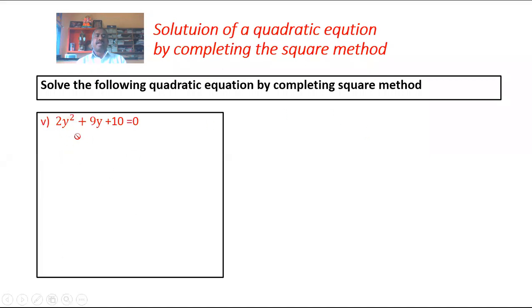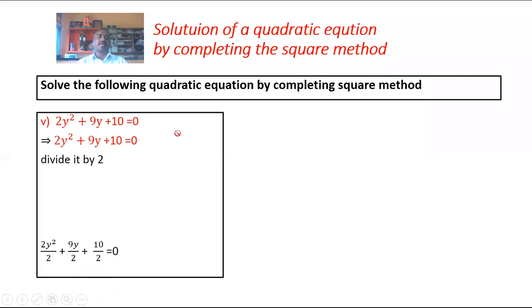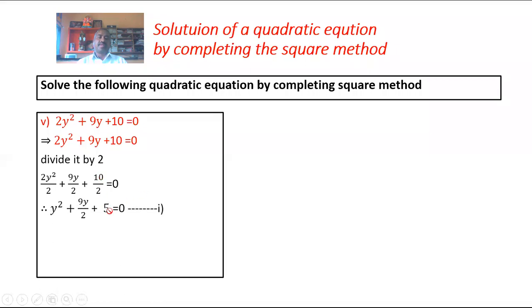Problem number 5: 2y squared plus 9y plus 10 equals 0. The coefficient of y squared is 2, not 1. Divide by 2: 2y squared upon 2 plus 9y upon 2 plus 10 upon 2 equals 0. Since 2 fives are 10, we get y squared plus 9y upon 2 plus 5 equals 0, equation number 1.